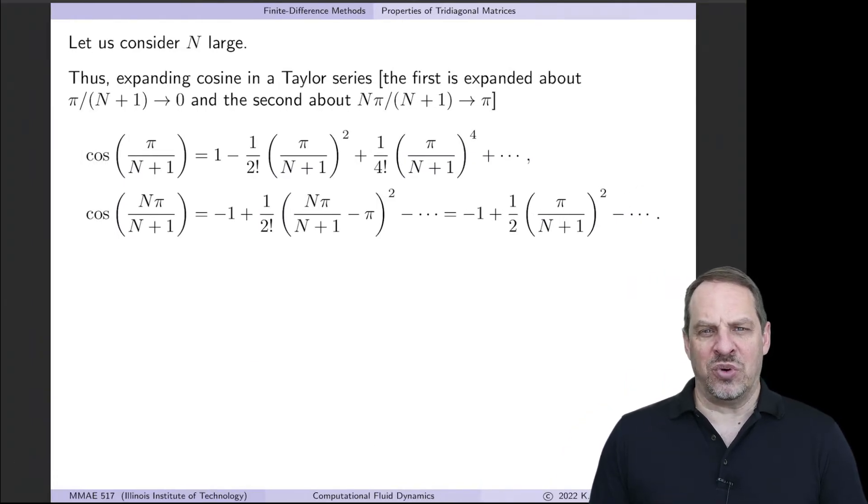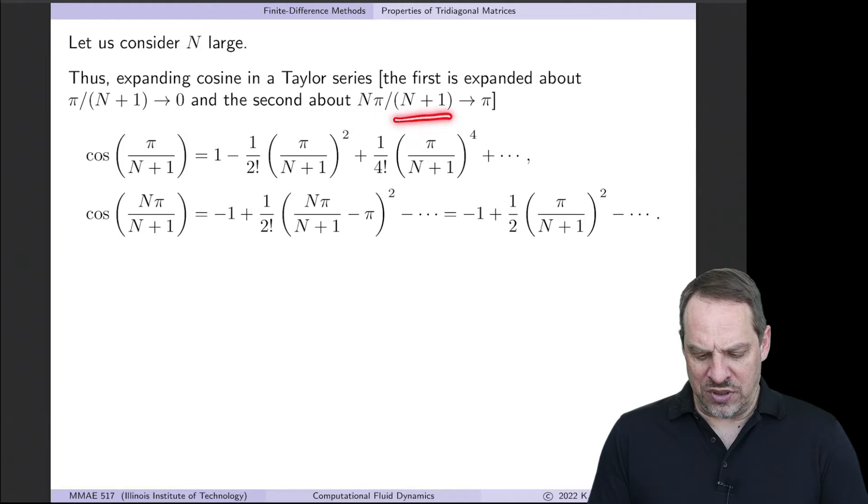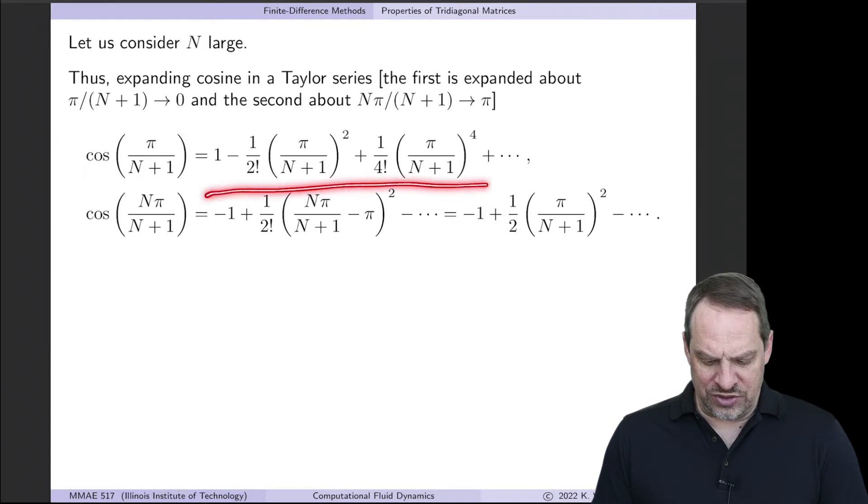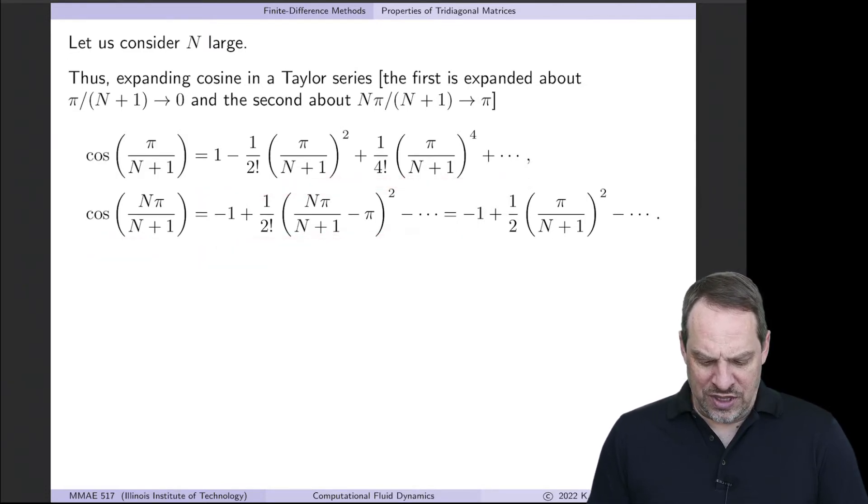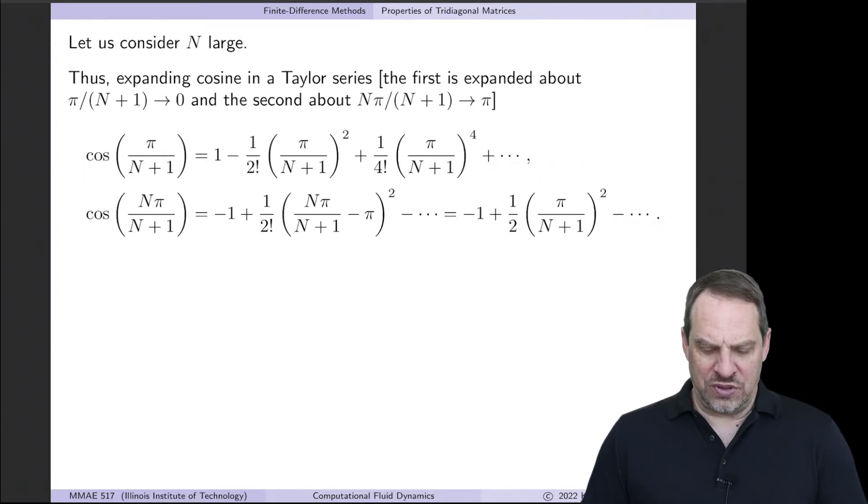The details here aren't terribly important. So for the first one, the π/(N+1), we're going to expand the Taylor series around 0. And for the other one, the Nπ/(N+1) is going to be expanded around π. So here is that first one, here's the Taylor series. Here's the second one, here's the Taylor series. And if you square this, you'll get this as the first term. And of course, there's many more terms, but let's just keep the first couple.